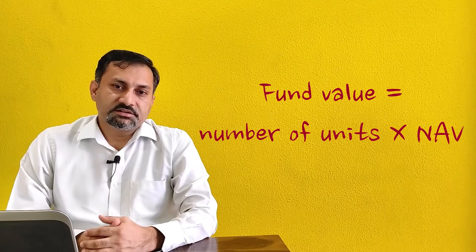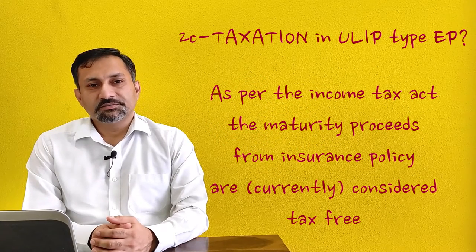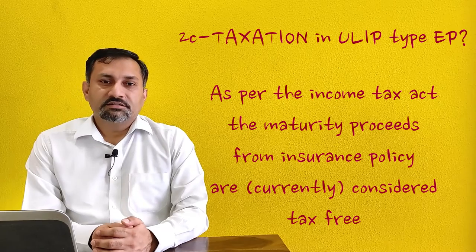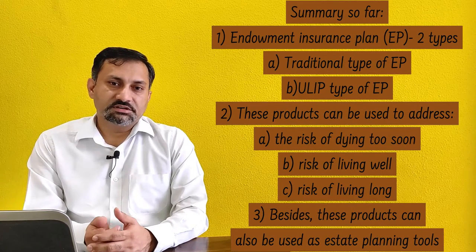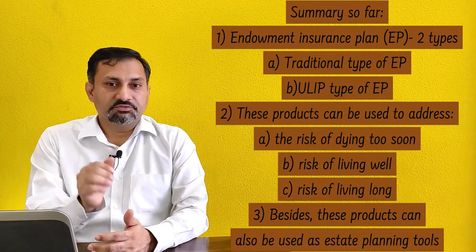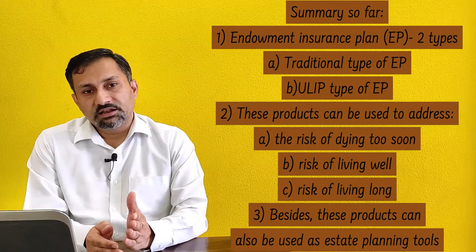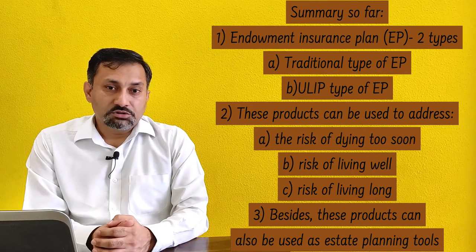Insurance companies consider ULIP as an appropriate solution or a combination of life insurance and investments. As regards taxation, the maturity proceeds from any insurance plan are currently considered tax-free. So far, we have discussed the endowment type of insurance plan, within which we have discussed the traditional type of endowment plan and the ULIP type of endowment plan. These types of plans can be used to address the dying too soon, living well, and living long kinds of risk. Besides, these products can also be used for estate planning.